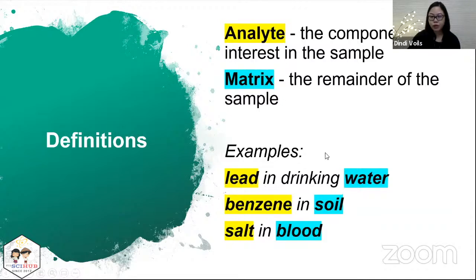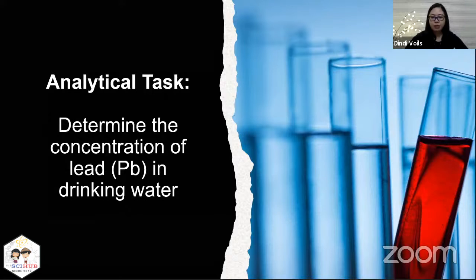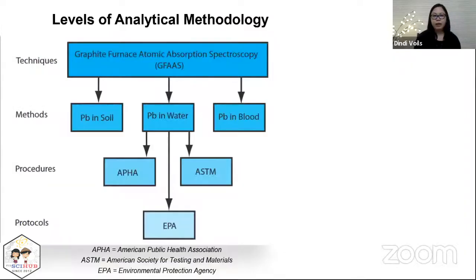For example, you have lead in drinking water and you want to know the concentration of lead. So lead is the analyte, and the remainder of the sample is water — so you have a water matrix. Your task is to come up with a method to determine the concentration of lead in drinking water, and this is best approached by knowing the different levels of analytical methodology.